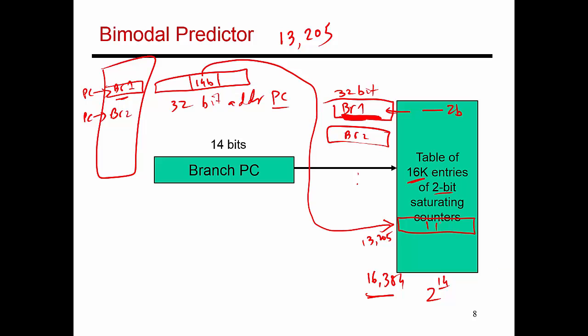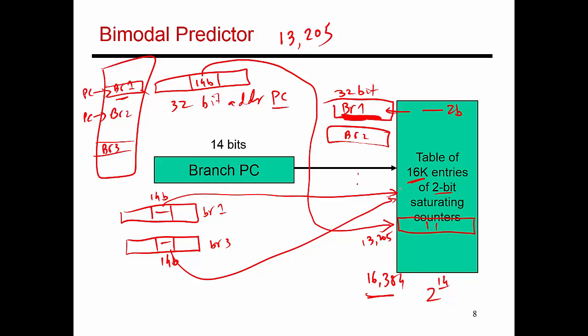This is not a perfect system because you could have multiple different branches which have different addresses. There could be another branch here, branch 3. We know that branch 1 and branch 3 have different 32-bit addresses because they are at different locations in memory. But it's possible that a subset of their bits may be exactly identical. The 14 bits that I'm using to index into the branch predictor, these 14 bits in branch 1 and branch 3 may be exactly the same, which means that both of these entries may end up mapping to exactly the same entry.